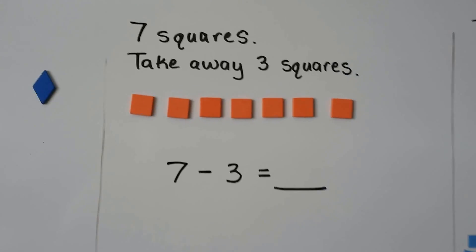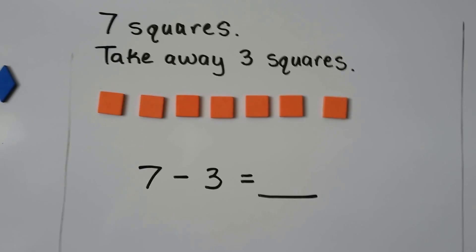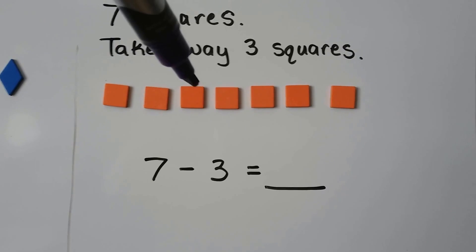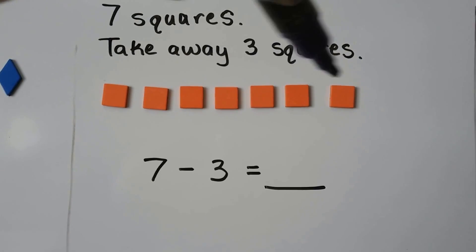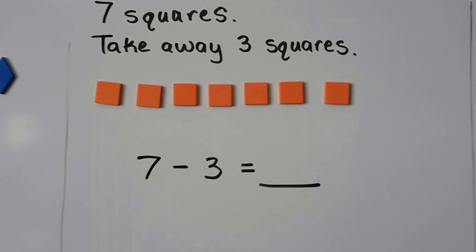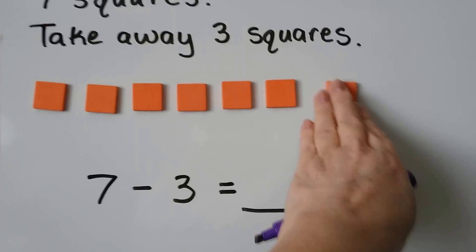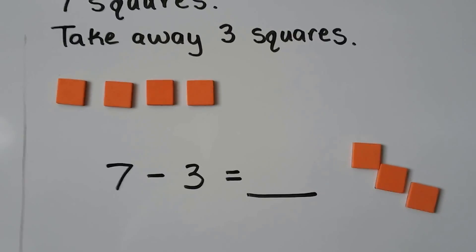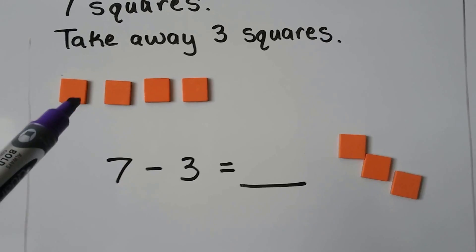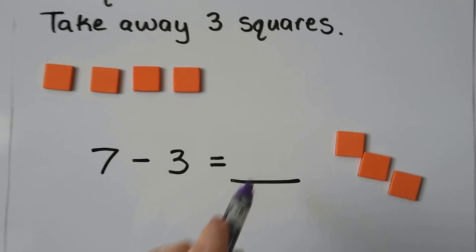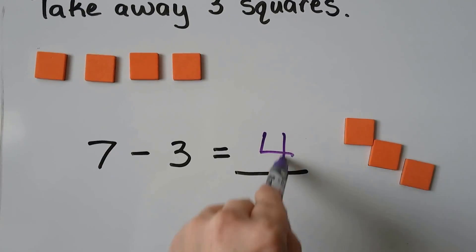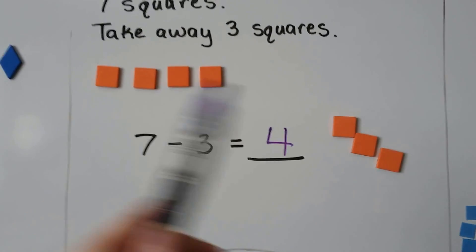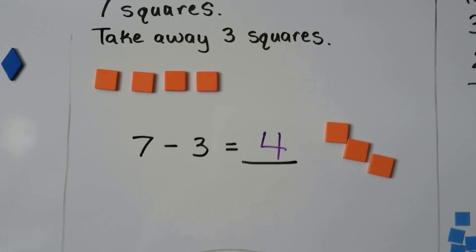There are seven squares. Take away three squares. One, two, three, four, five, six, seven. Take away three squares: one, two, three. Now there are one, two, three, four squares. We can use counters to help us model the subtraction.